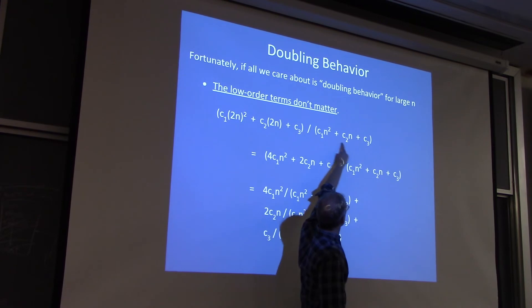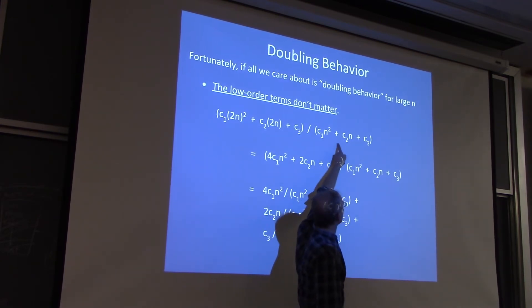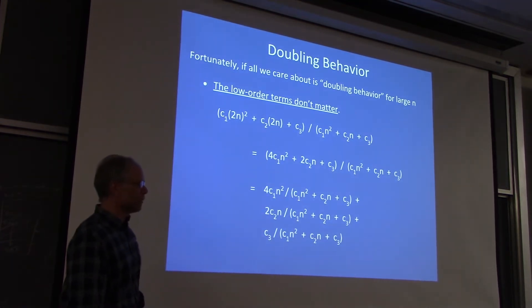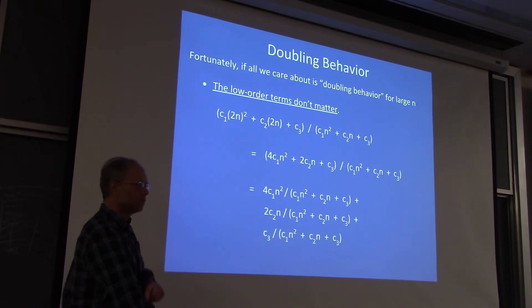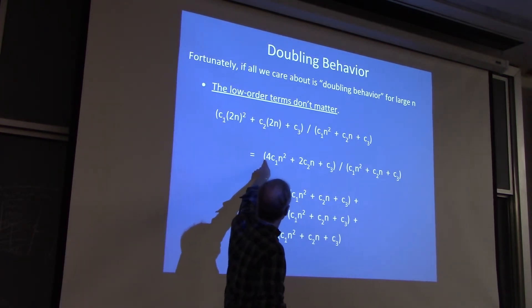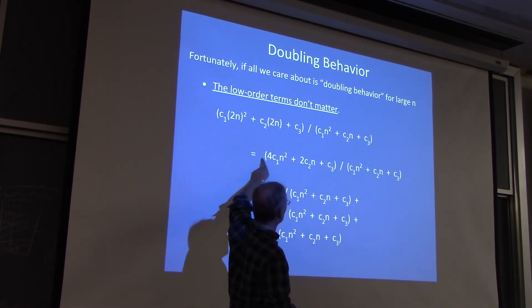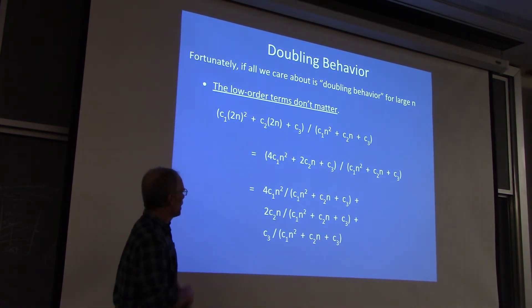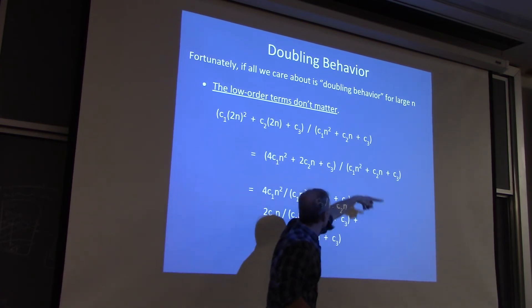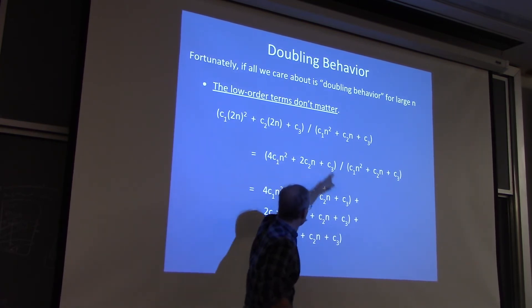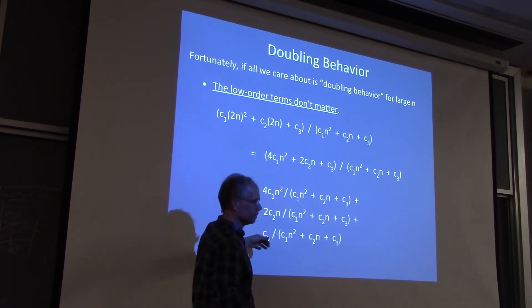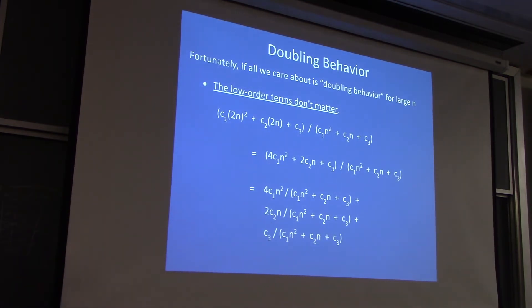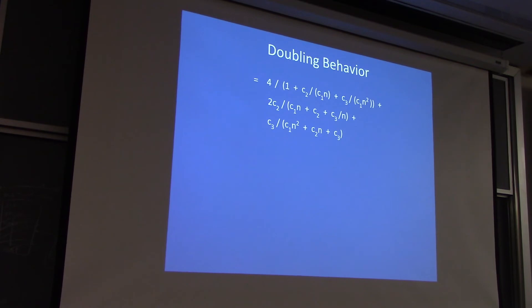This is our formula for the running time of selection sort. So think of that as f of n. So what's this here? That's f of 2n. I've just plugged in 2n for everywhere for n. And that gives me, here I just simplified it a little bit. So this is the running time for 2n, this is the running time for n. Now, I'm dividing this by the denominator, and then this by the denominator, and then this by the denominator. So I end up with this nasty sum here. So I'm just doing algebra so far. Nothing mysterious.